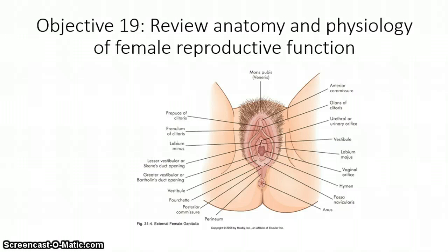You can find a photo similar to this on page 66 in your textbook. When you are looking at the structures of female genitalia, you need to be aware of what the external structures are. You have the mons pubis, which is a fat pad that covers the symphysis pubis. You have the labia majora and labia minora. The labia majora is utilized to protect the inner vulvular structures, and the labia minora is comprised of connective tissue and smooth muscle. It's highly sensitive.